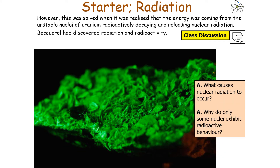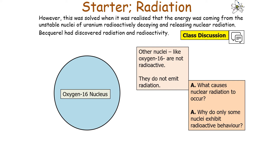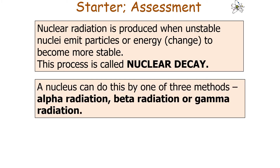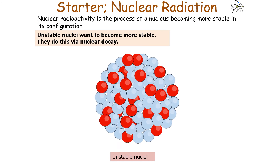This led to some questions: what causes nuclear radiation to occur, and why do only some nuclei exhibit this radioactive behaviour? Some nuclei, like uranium-235, are radioactive and emit nuclear radiation, yet other nuclei, like oxygen-16, are not radioactive. Nuclear radiation is produced when unstable nuclei emit either particles or energy and change to become more stable. This entire process is called nuclear decay. A nucleus can do this by one of three methods: emitting alpha radiation, emitting beta radiation, or emitting gamma radiation. So nuclear radioactivity is the process of a nucleus becoming more stable in its configuration.